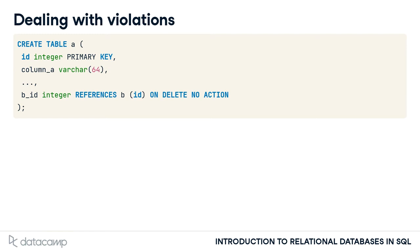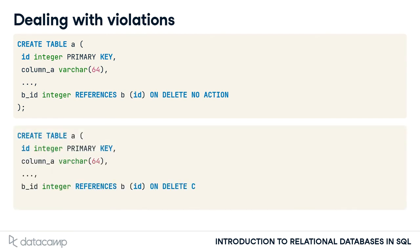This means that if you try to delete a record in table B which is referenced from table A, the system will throw an error. However, there are other options. For example, there's the CASCADE option, which will first allow the deletion of the record in table B and then will automatically delete all referencing records in table A. So that deletion is cascaded.